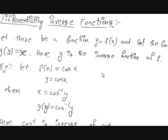In inverse functions, if we input a value from set B, we get the corresponding value in set A. For example, if there is a function from A to B and you input the value 1 from A you get 2 in B, then the inverse function goes from B to A — if you input 2 from B you get 1 from A. Let there be two functions: y = f(x) and g(y) = x. Then g is the inverse of f.